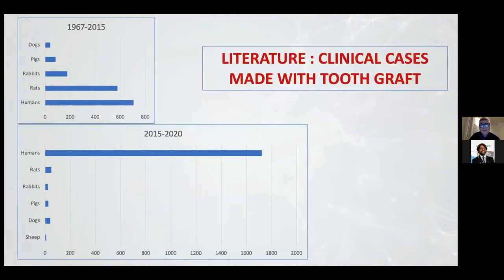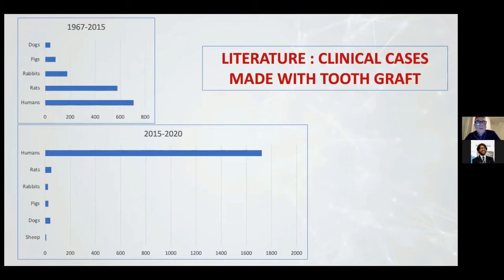We analyzed a lot of articles in literature. It's interesting to observe the clinical cases published from 1967 to 2020. The articles in humans have doubled, indicating the possibility to use the tooth with new devices, like a tooth transformer and other devices on the market.